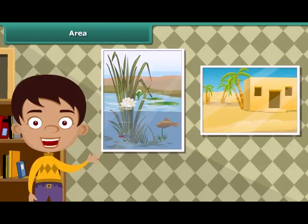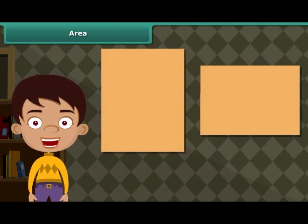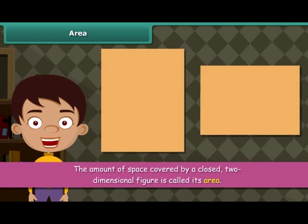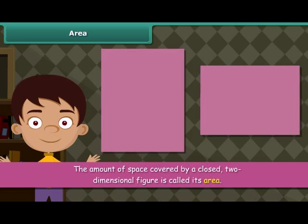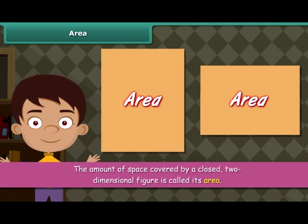Take two paintings of different sizes and compare them. The amount of space covered by the two paintings will be different, because the lengths and breadths of the two paintings are different. The amount of space covered by a closed two-dimensional figure is called its area. The area of one such figure can be different from the area of another.